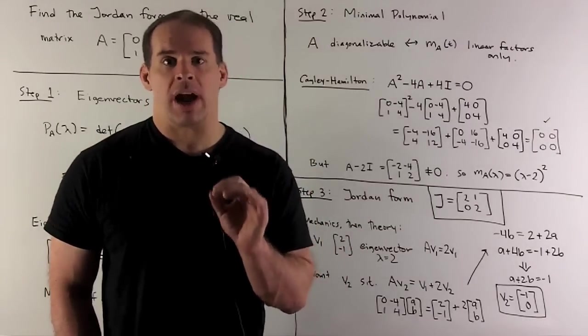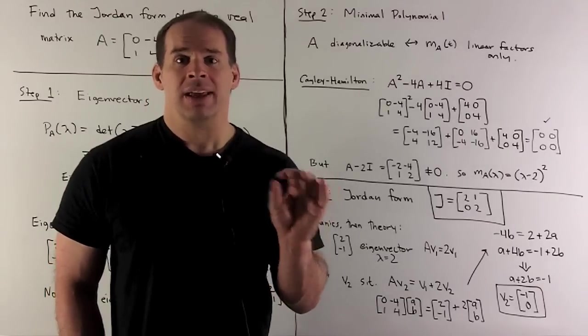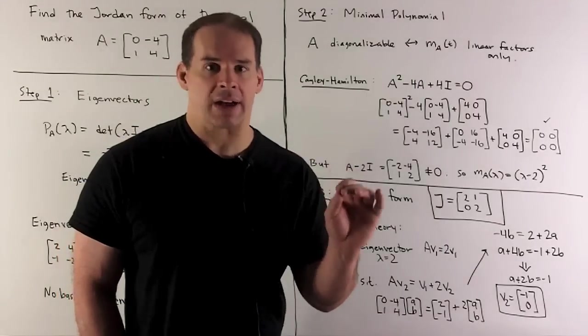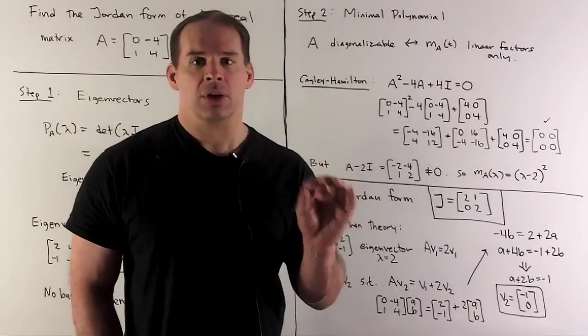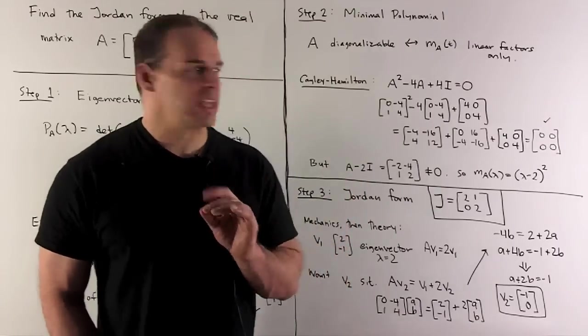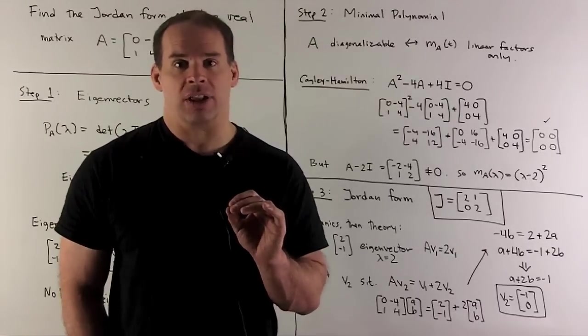That's where the problem arises. We have a theorem that states a matrix A is diagonalizable if and only if its minimal polynomial has only linear factors. So, that means no squares, cubes, or anything of higher exponent. In this case, I have a square, so this matrix is definitely not diagonalizable.